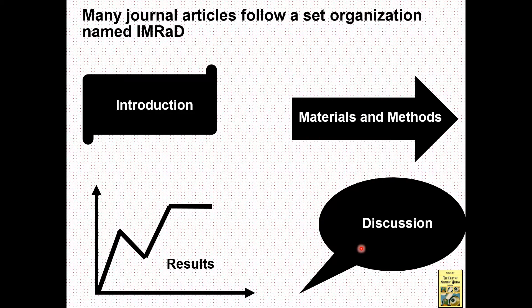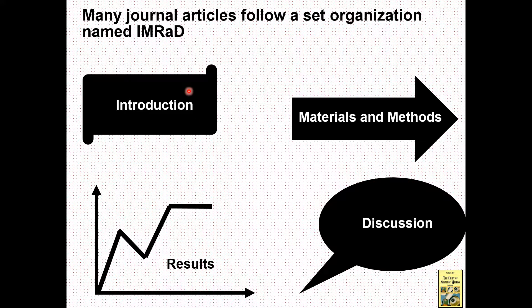This is basically the pattern of any scientific journal. Whenever you study a scientific paper or scientific article, you will know that the introduction section, materials and methods, results, and discussion are the very common parts of every research article. We can say these are the standard parts of scientific articles, summarized as IMRaD.